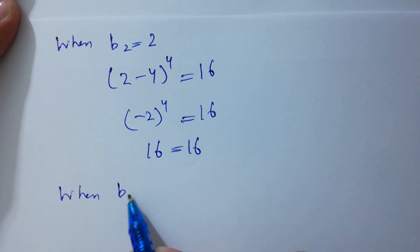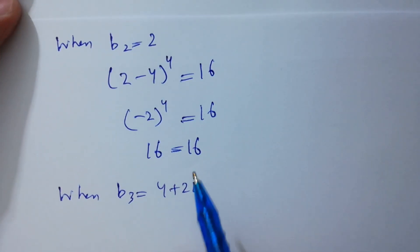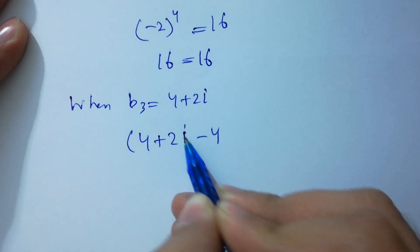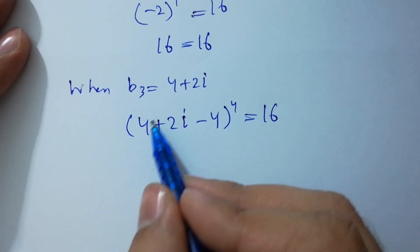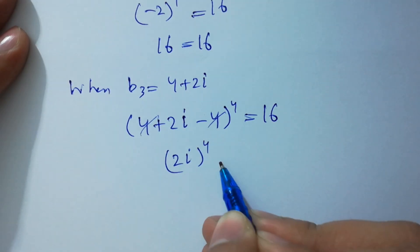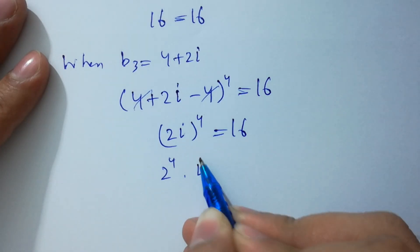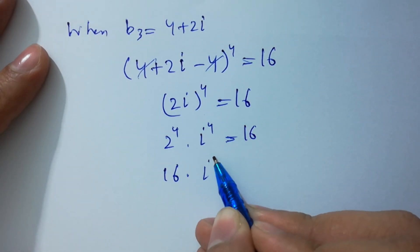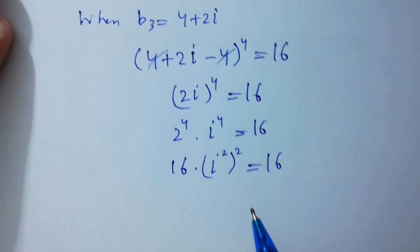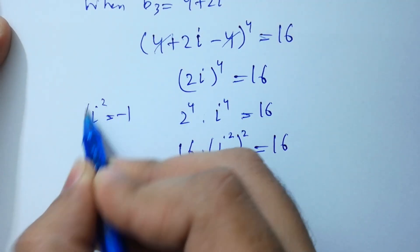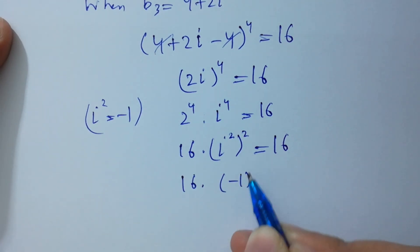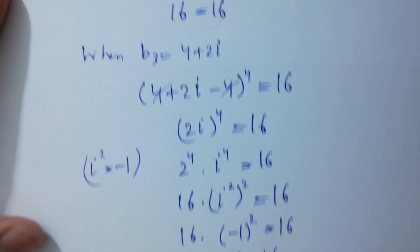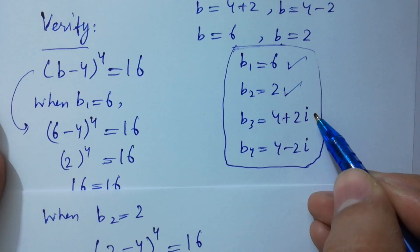When b₃ = 4+2i, we put it in: (4+2i-4)⁴ = (2i)⁴ = 2⁴ · i⁴ = 16 · i⁴. Since i⁴ = (i²)² and i² = -1, we get (-1)² = 1. So 16 · 1 = 16, which satisfies the equation. b₃ = 4+2i is correct.